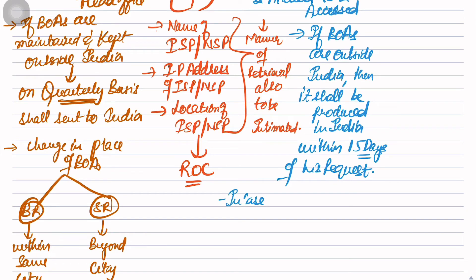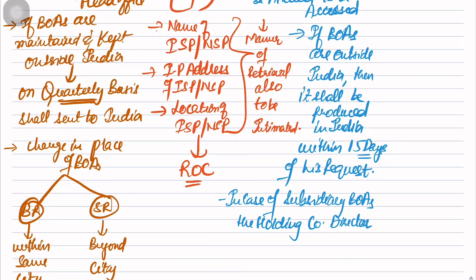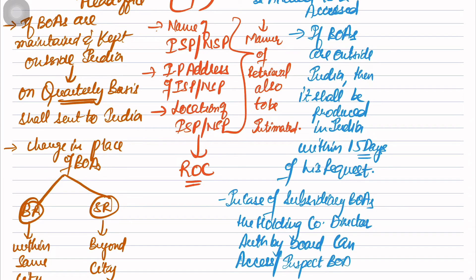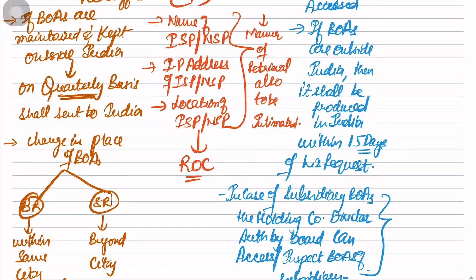Write: in case of subsidiary Books of Accounts, the holding company director authorized by the board can access or inspect Books of Accounts of the subsidiary. Very important point. These are the small hidden points in the provisions of Section 128. Once you will read the bare act, you'll understand that these points are not given obviously anywhere - they are in some corner and you have to locate them.